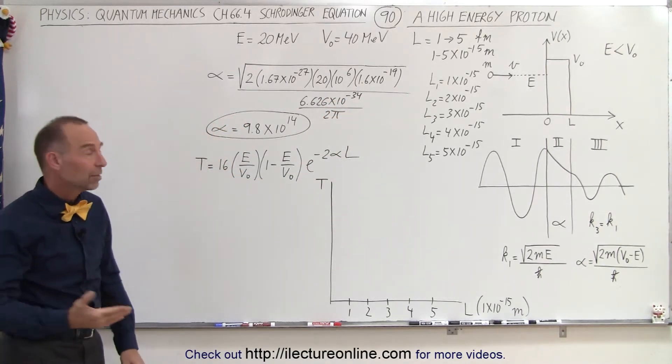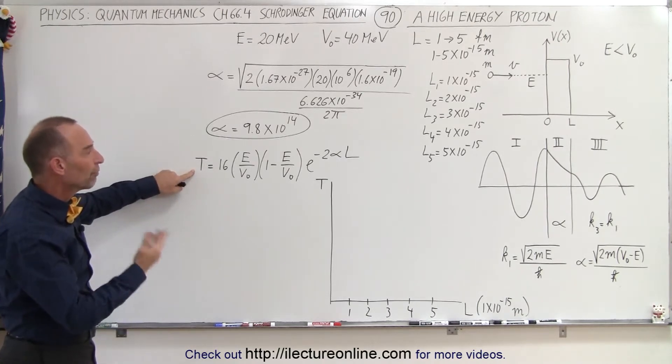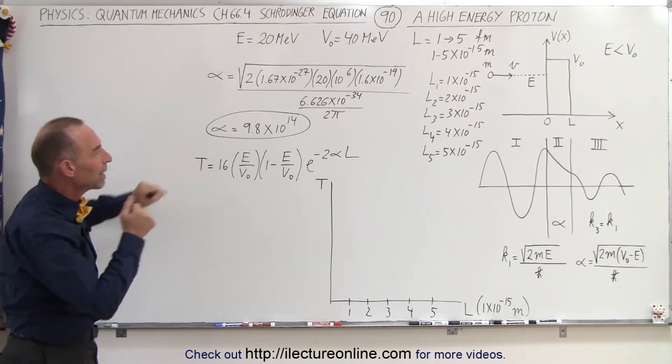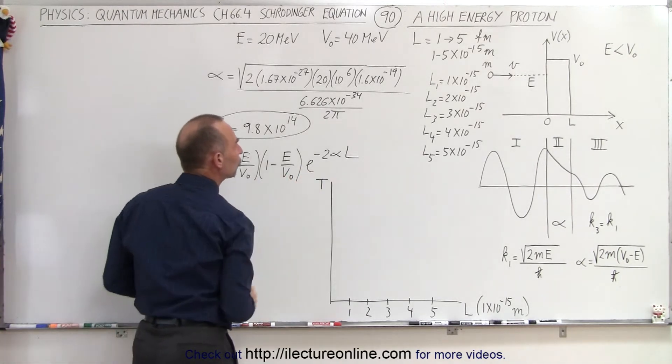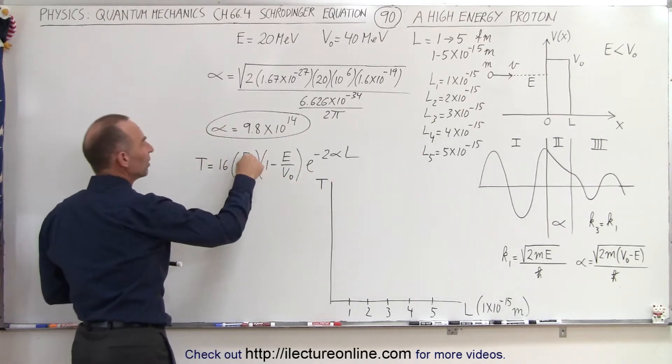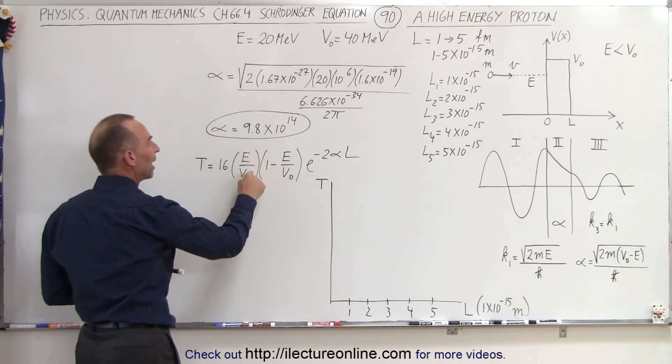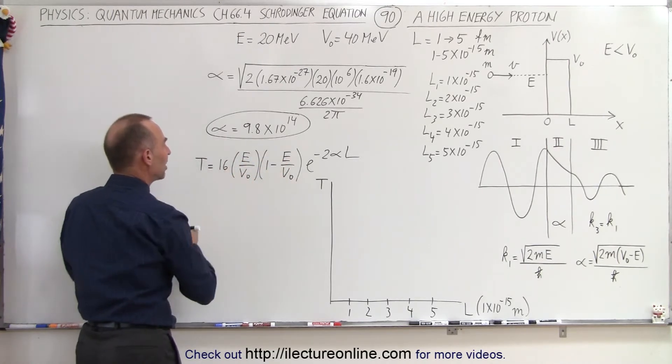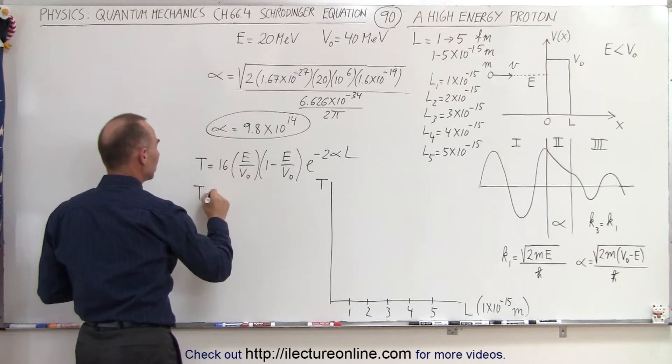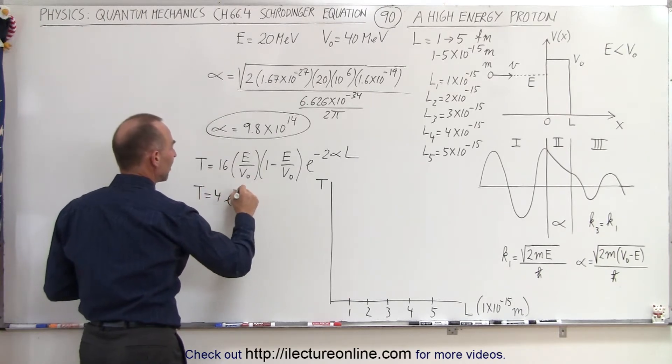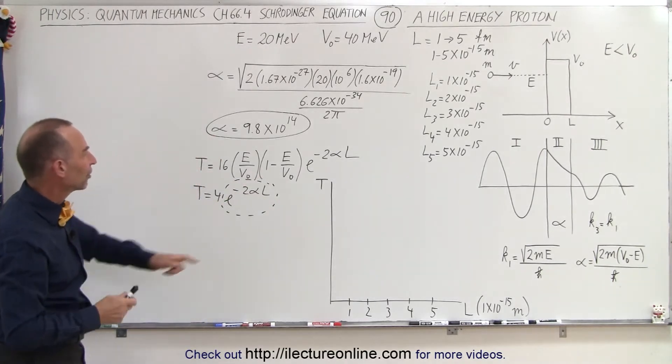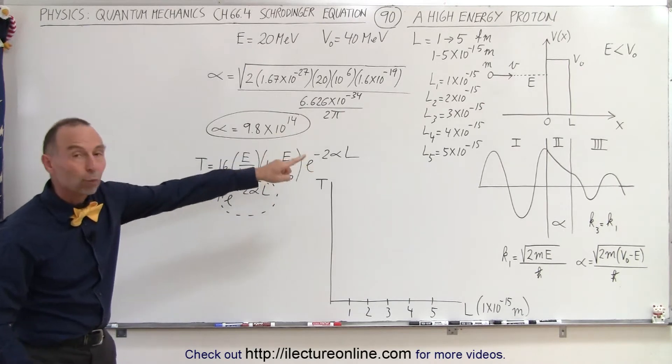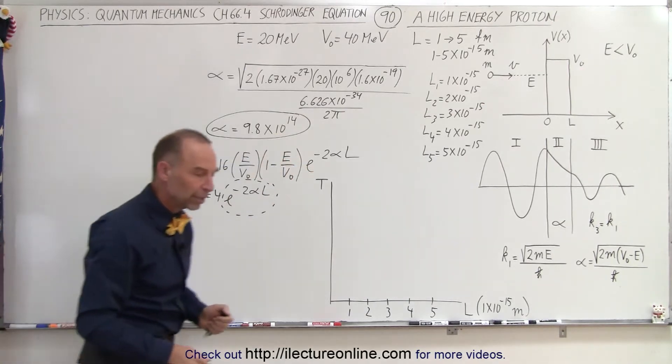Let's now calculate the various transmission coefficients, the probabilities of the particle making it through the barrier. It's going to be this number times e to the minus 2 alpha L. Since E over V is 1 half, that's 1 half times 1 half times 16. So this becomes T is equal to 4 times e to the minus 2 alpha L. Let's go ahead and calculate the various e to the minus 2 alpha L's for the various widths of the barrier.